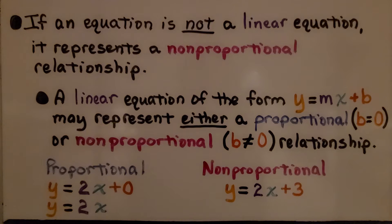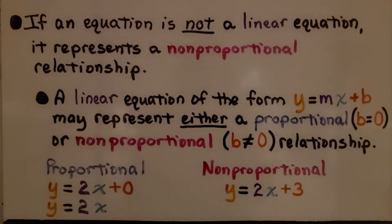If an equation is not a linear equation, it represents a nonproportional relationship. A linear equation of the form y equals mx plus b may represent either a proportional — that's when b equals zero — or nonproportional — that's when b is not equal to zero — relationship.